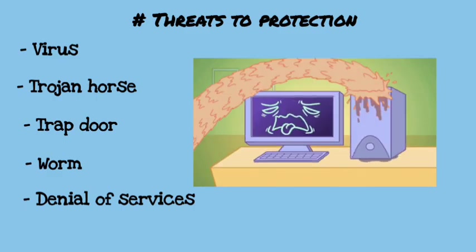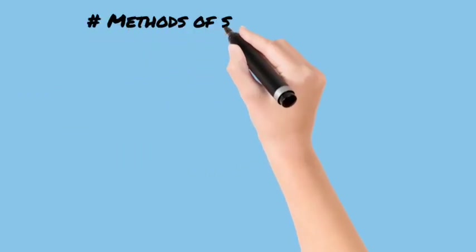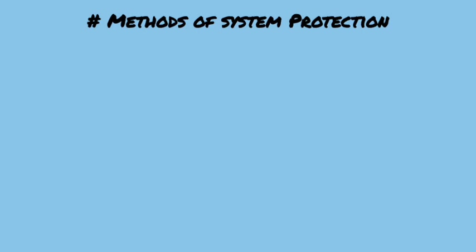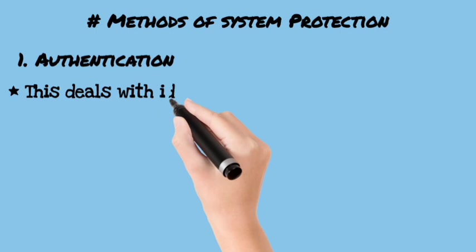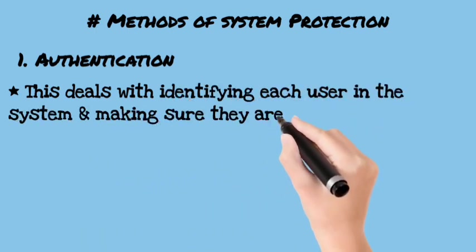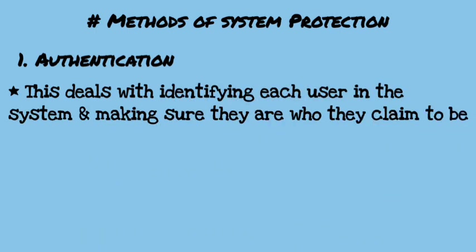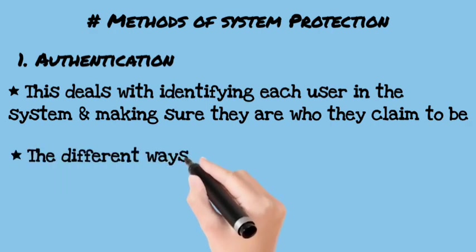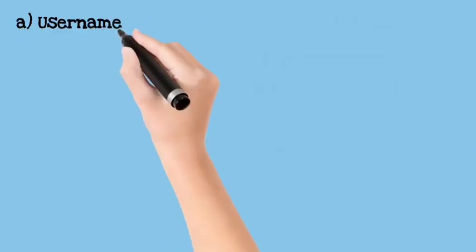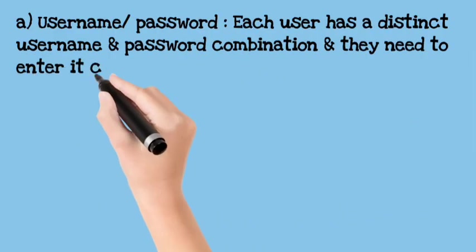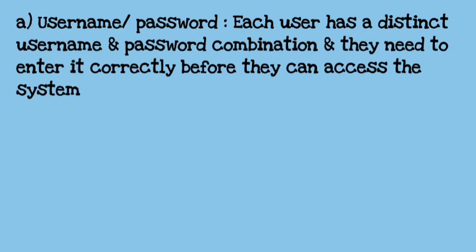In our operating system you can see some methods which can protect our system. First we have authentication. What is the meaning of authentication? It is verifying the user using the computer — claiming who is the real human. Now there are some ways. First we have username and password. Every user has their own username and password.